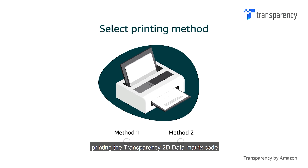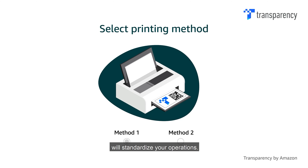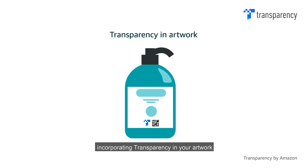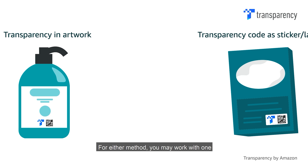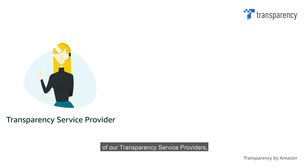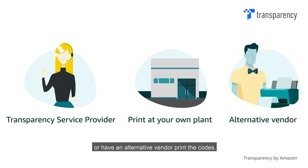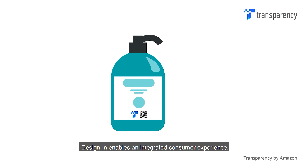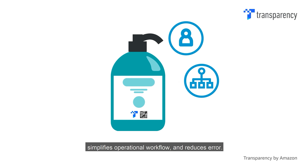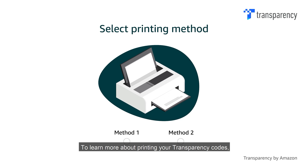Next, you will determine your method of printing the Transparency 2D Data Matrix Code. This is essential in defining how you will standardise your operations. There are two printing methods: incorporating Transparency in your artwork, otherwise known as Design In, or printing the Transparency Codes on a sticker or a label. For either method, you may work with one of our Transparency Service Providers, print in-house at your own plant or location, or have an alternative vendor print the codes. Design In enables an integrated consumer experience, simplifies operational workflow and reduces error. To learn more about printing your Transparency codes, please refer to the Printing Transparency Codes video.